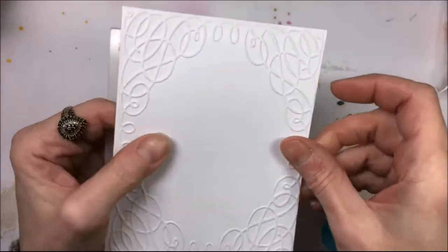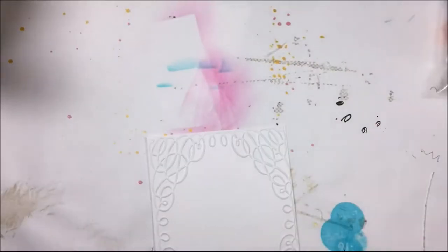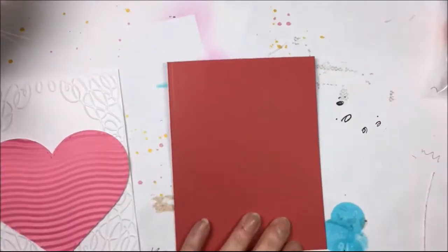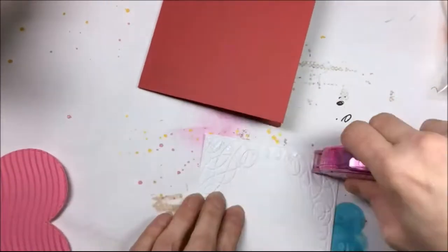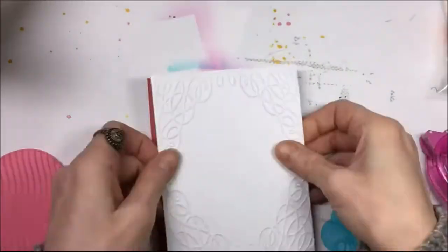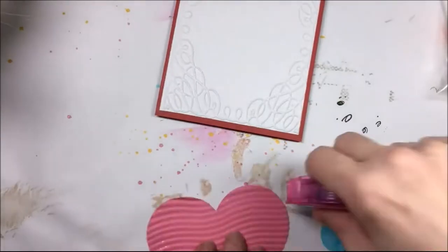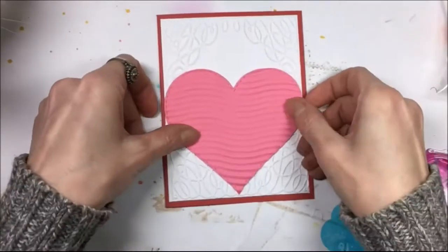I'm going to use Georgia Pacific cardstock and I put that through my Sizzix Big Shot. I got my embossed background and now I'm just seeing where I want to put the heart. I have a red card base, this is a standard A2 size card.